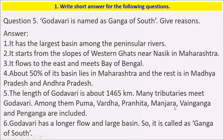Many tributaries meet Godavari, among them Purna, Wardha, Pranhita, Manjara, Venganga, and Penganga are included. Godavari has a longer flow and large basin, so it is called the Ganga of the South.